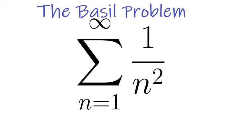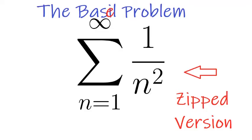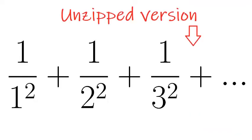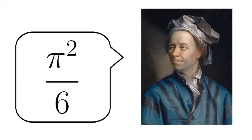We're looking at the famous Basel problem. Not that Basel. The Basel problem asks us for the sum of the reciprocals of the positive integers. It was originally solved by Leonard Euler. This is his solution.